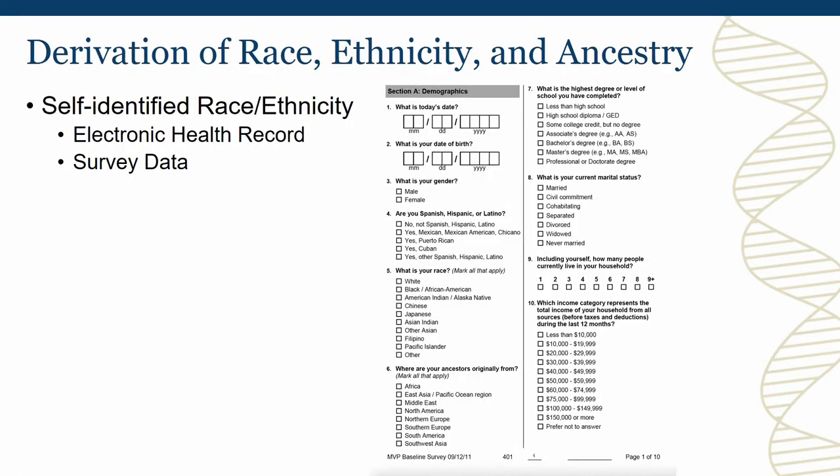This gets to part of what we wanted to discuss today — our demographics, which are self-reported from survey data. There are at least two areas where we collect self-identified race and ethnicity: from natural language processing of the electronic health record itself, and from what participants provide in survey data. The first page of our baseline survey lets participants indicate what race they identify with and where they think their ancestors come from. Between the two sources, about 96 to 97 percent of participants have some evidence of self-identified race, though sometimes there are discrepancies between the EHR and the survey data.